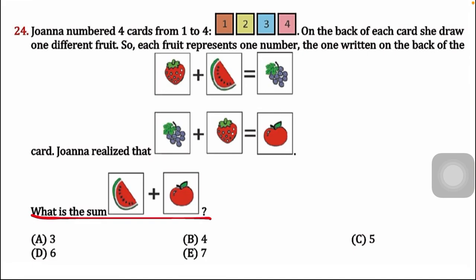What we are going to do first is solve the two equations in the middle section. After getting those values, we will be able to find the sum of watermelon plus apple.